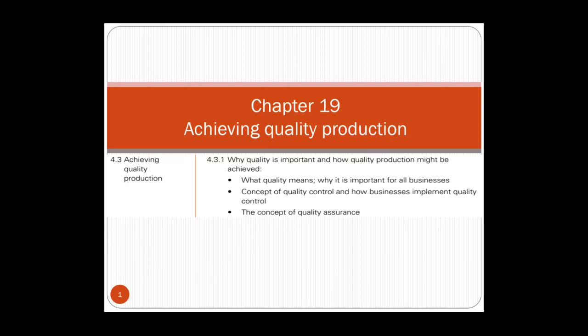Hello and welcome back to Chapter 19. This chapter we're going to talk about quality, its meaning, and why it's important in production. We're going to explain two concepts of quality: quality control and quality assurance. Questions in past papers are clear about this topic, and this chapter is somehow short.